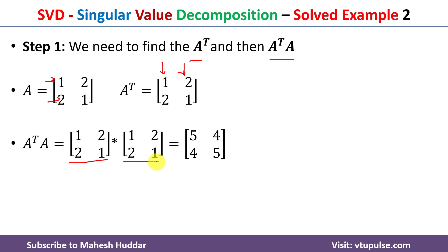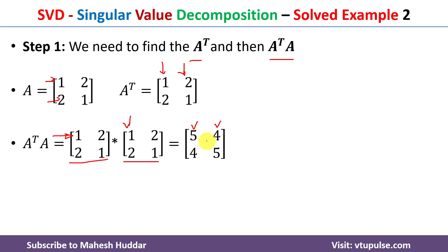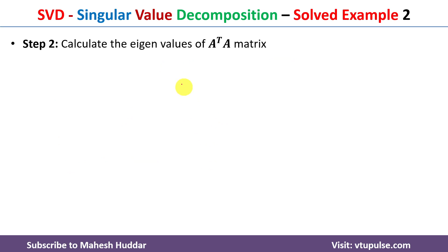To multiply A-transpose by A, we take the row of the first matrix multiplied by the columns of the second matrix. So 1×1 + 2×2 = 1 + 4 = 5. The same row multiplied by the second column gives 1×2 + 2×1 = 2 + 2 = 4. Calculating the remaining elements similarly, we get A-transpose·A = [5 4; 4 5].